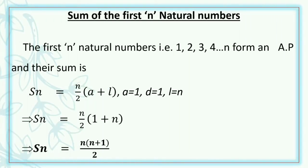We can also derive a formula for the sum of first n natural numbers. The natural numbers 1, 2, 3, 4, etc. form an AP with first term 1 and common difference 1. When we consider the first n terms, the first term A is 1 and the last term is n. Hence, Sn = (n/2)(A+L) = (n/2)(1+n), which gives Sn = n(n+1)/2. So the sum of the first n natural numbers is n(n+1)/2.